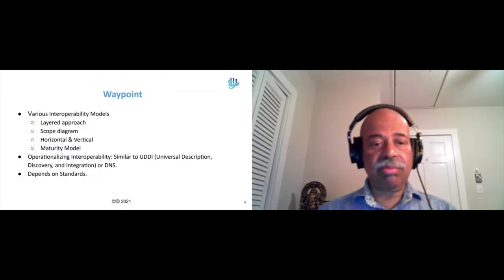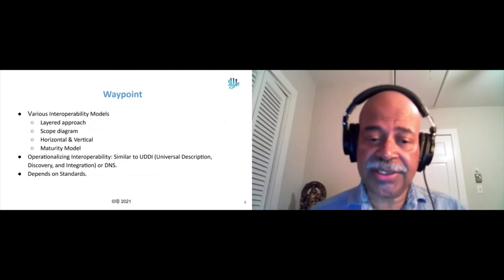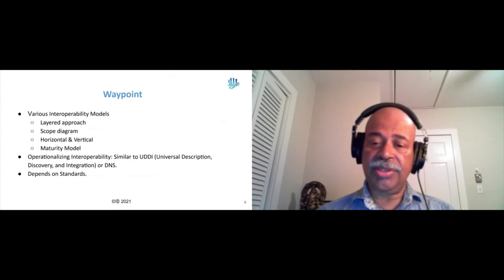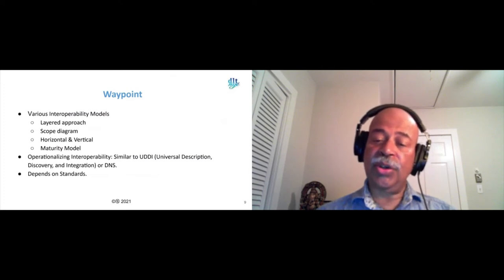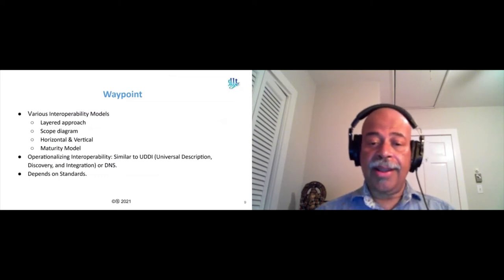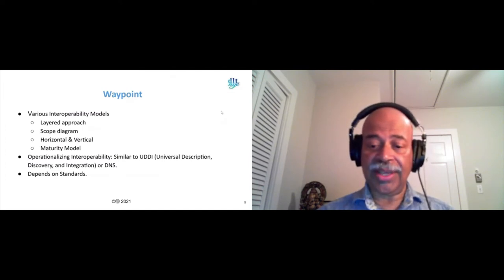We have gone through the various interoperability models, and now I'm going to start talking about operationalizing interoperability — try saying that fast — similar to the concept of Universal Description, Discovery and Integration (UDDI) or similar to the Domain Name System. In order to operationalize, you have to have registries, a way of discovering the other system, and be able to pass messages between one and the other. This depends on standards, standard schemas, and standard ways of looking at things.